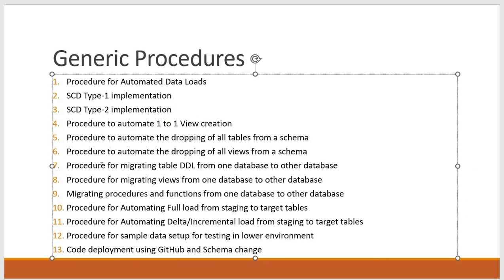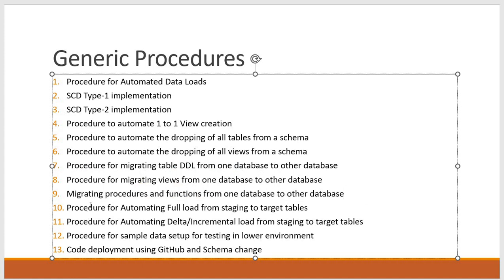Then I will cover a procedure for migrating table DDL and view DDL from one database to another database using an automated stored procedure. Along with tables and views, we have procedures, functions, and many other objects in a Snowflake database. Is it possible to migrate all those objects using a stored procedure? If not, what are the alternative ways? I will discuss this. Then I will explain a procedure for automating full loads from staging to target tables, including what is meant by a full load.